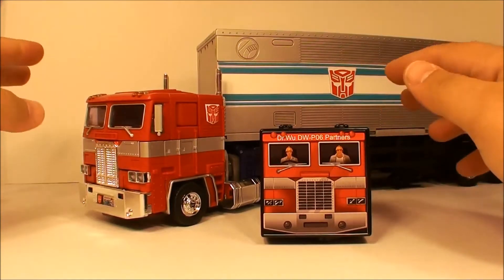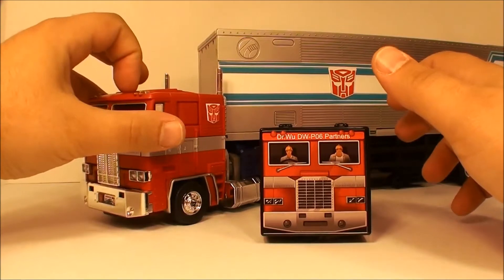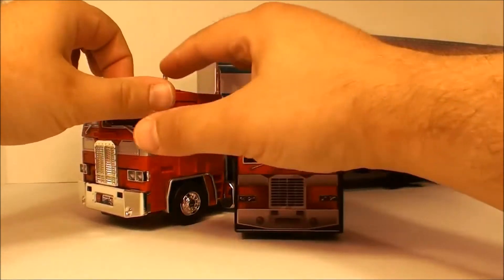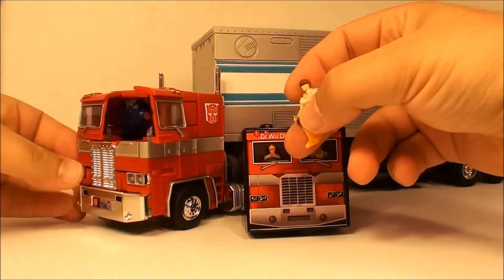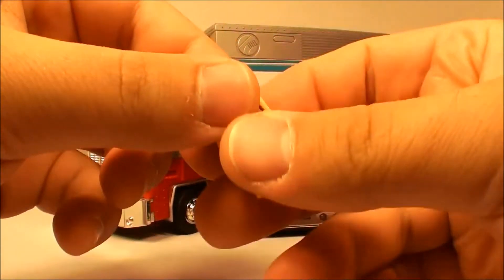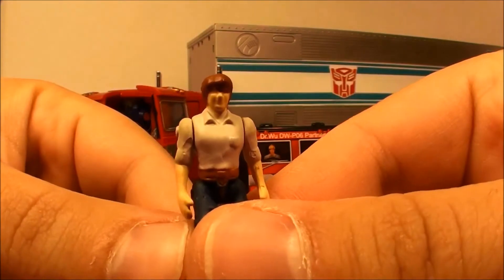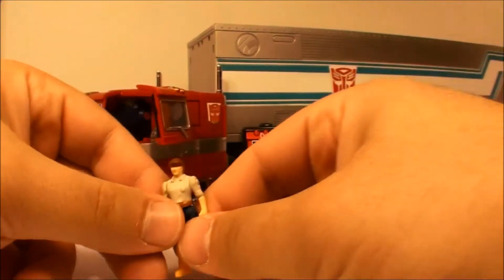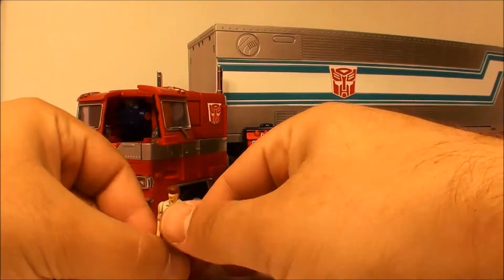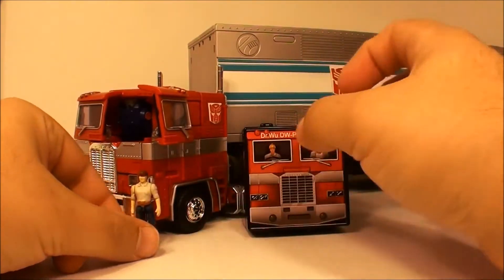So let's take out Spike here, which is the accessory. You kind of open the front and Spike fits in there. This was Spike just to refresh your memory. You know, very generic looking, doesn't really scream Spike or anything like that.